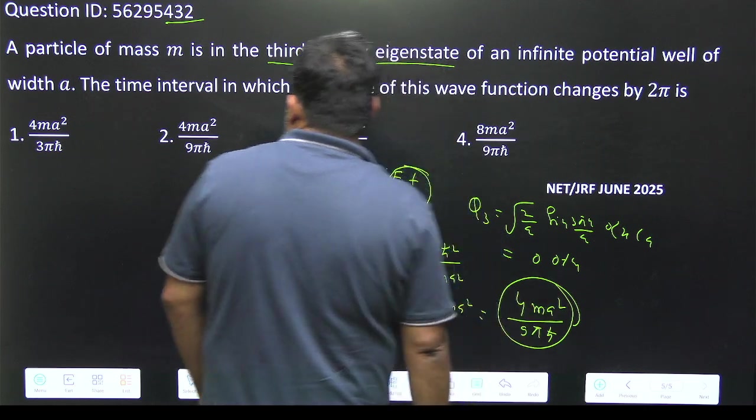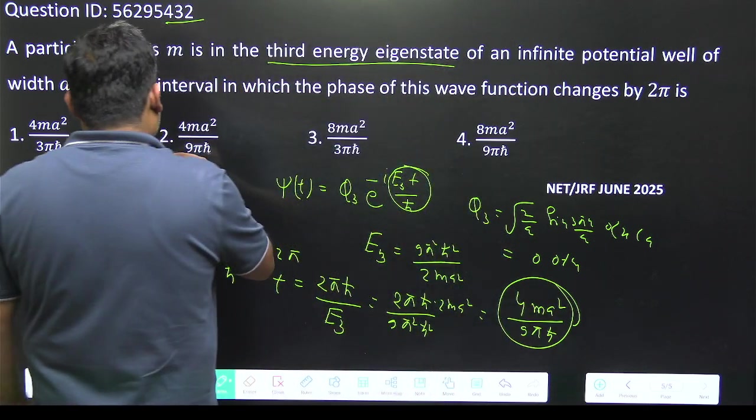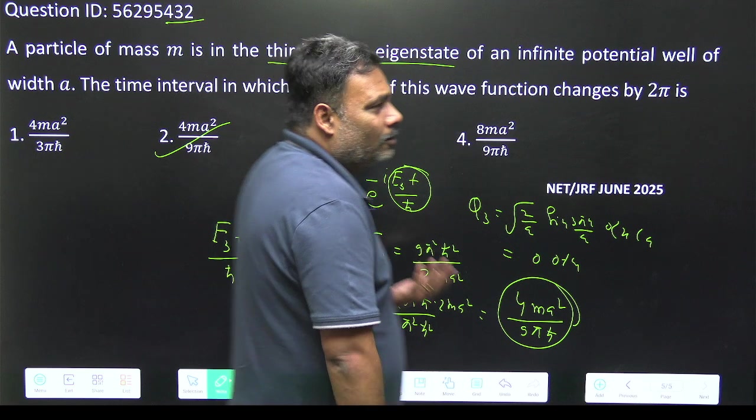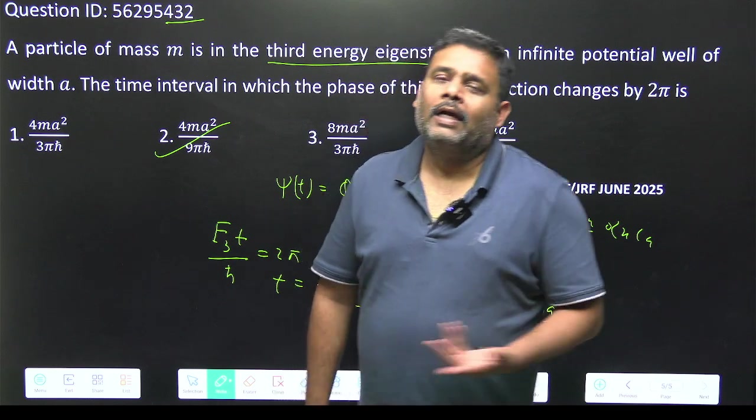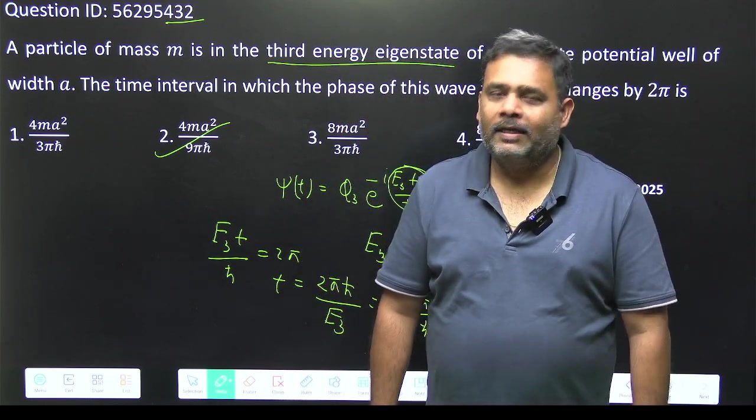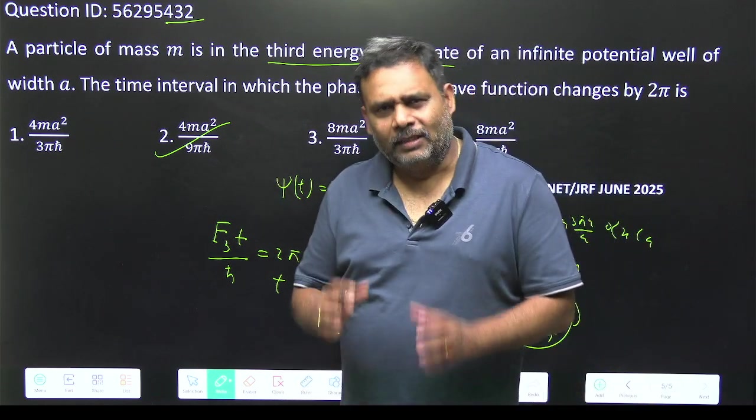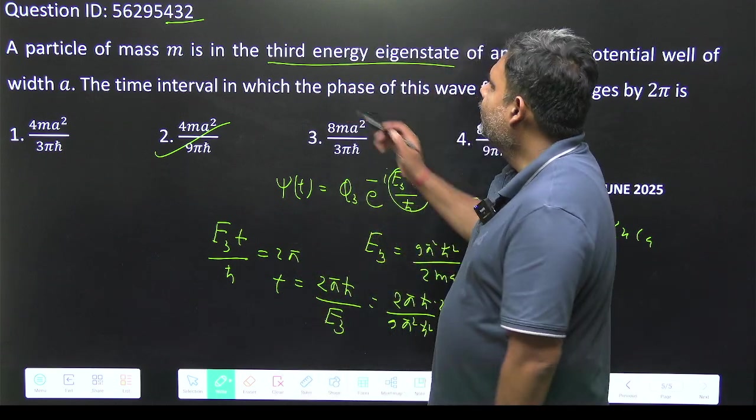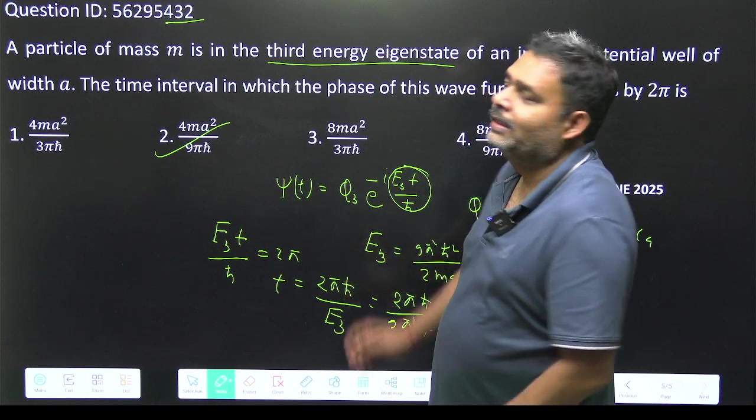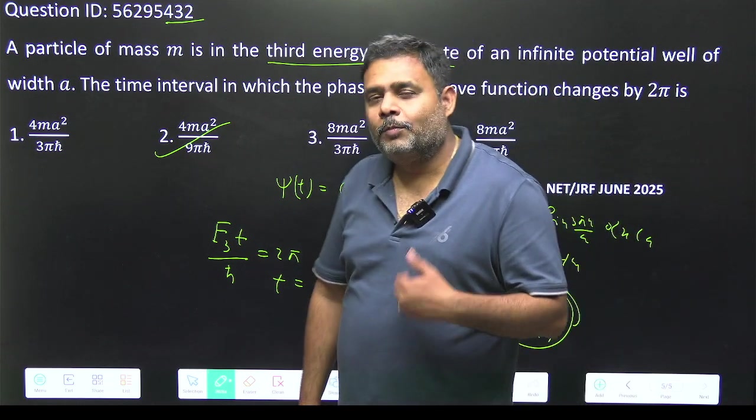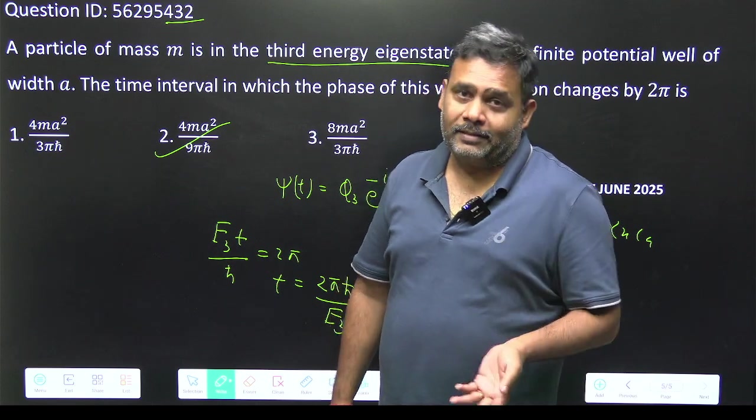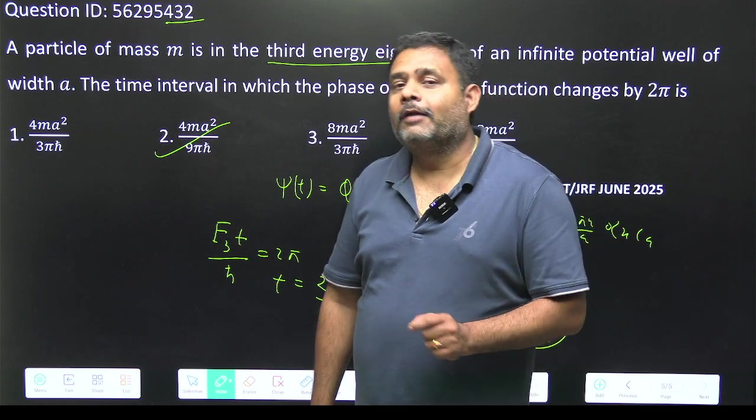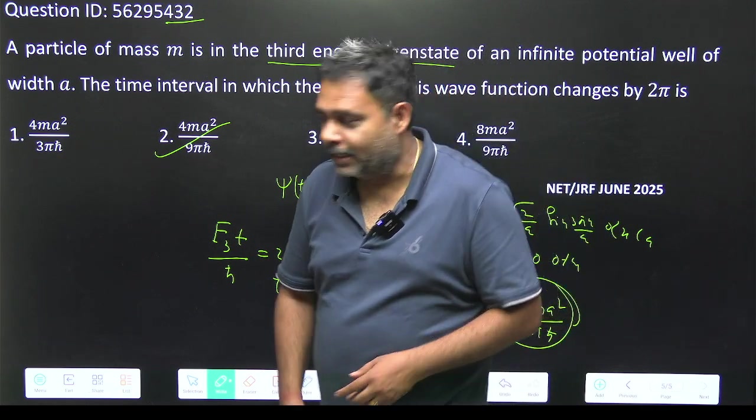We can just go for 4ma²/9πℏ, this will be the correct answer. Only you have to know how the time is going to evolve and you can use postulates 5 and give the answer. The key thing is you have to understand that third energy eigenstate is n equals 3, because some people can do the wrong calculation by assuming third excited state. If it will be third excited state then we have to calculate for n equals 4. Thank you.